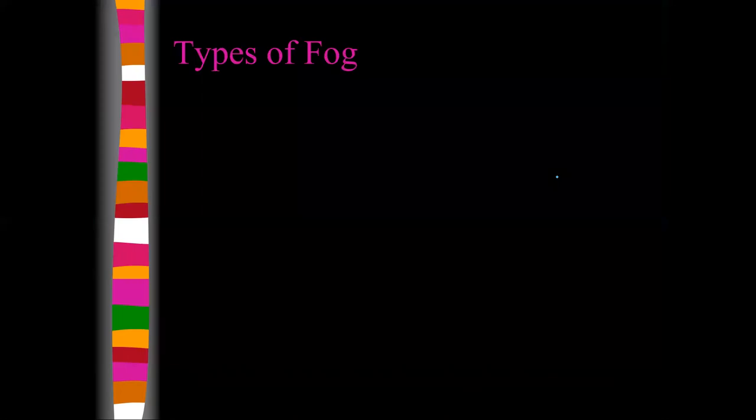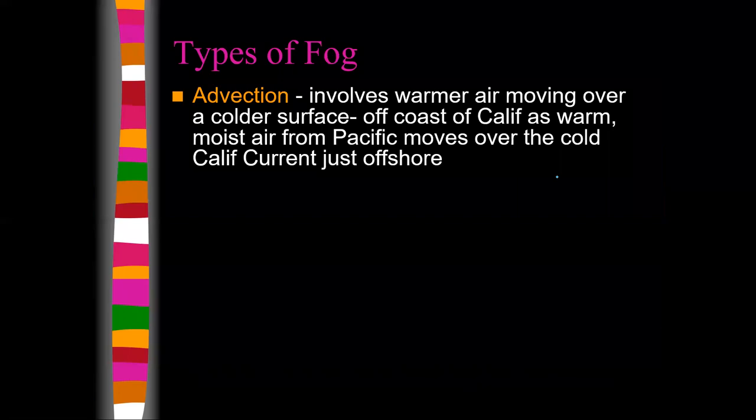That brings us to types of fog. A fog is just a cloud at ground level, composed of the same thing as cloud droplets — water. The droplets are tiny, so they're able to stay in suspension, just like cloud droplets.